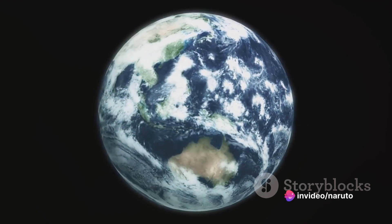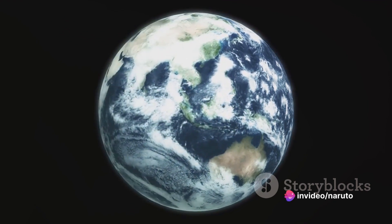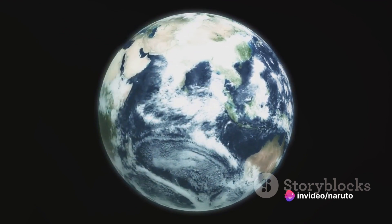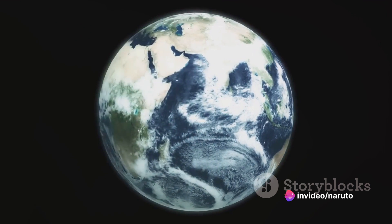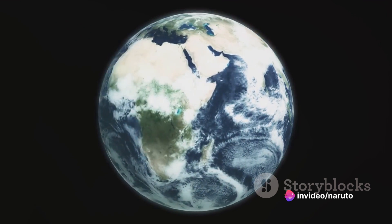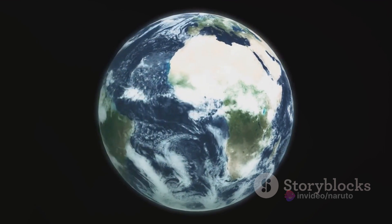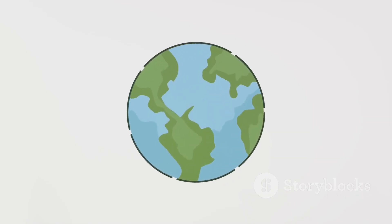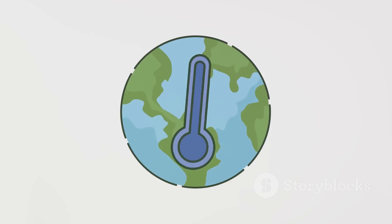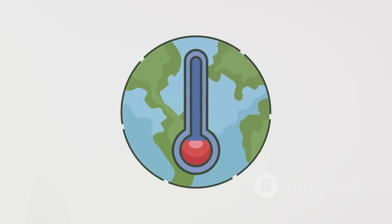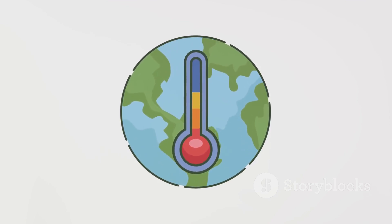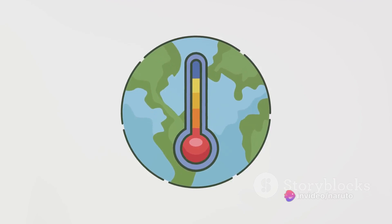Without the greenhouse effect, the average temperature of our planet would be around minus 18 degrees Celsius, far too cold for most life forms. Instead, thanks to the greenhouse effect, the average temperature is a much more livable 15 degrees Celsius.